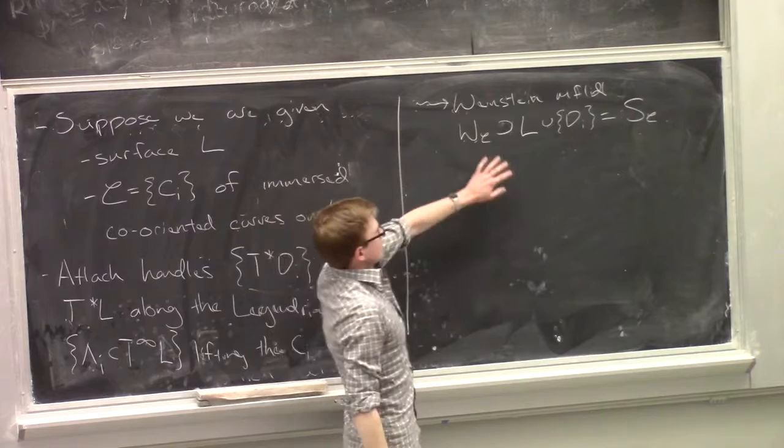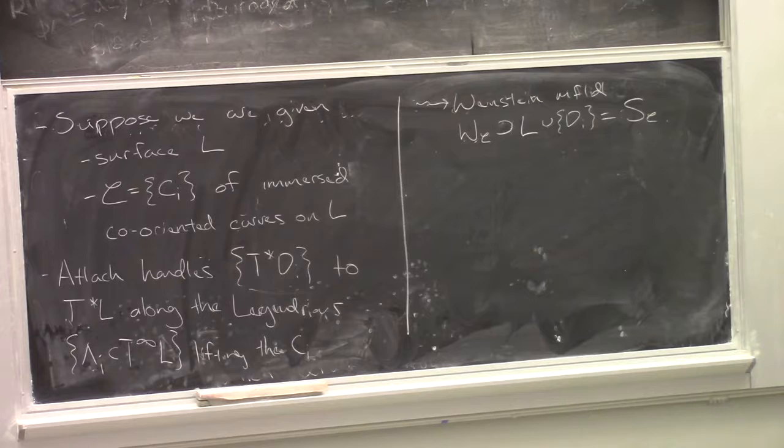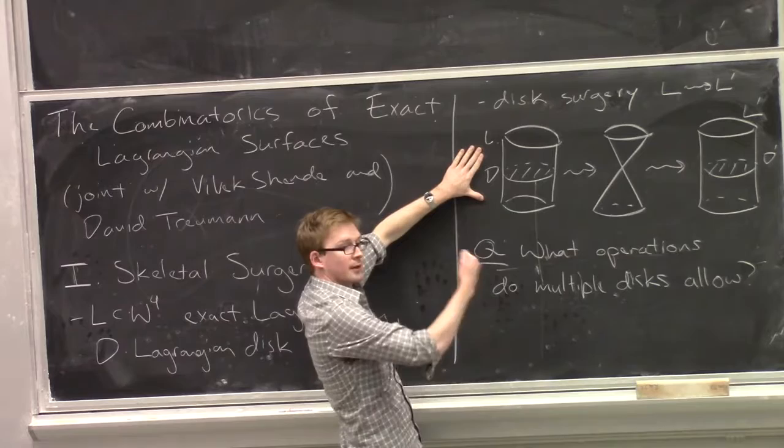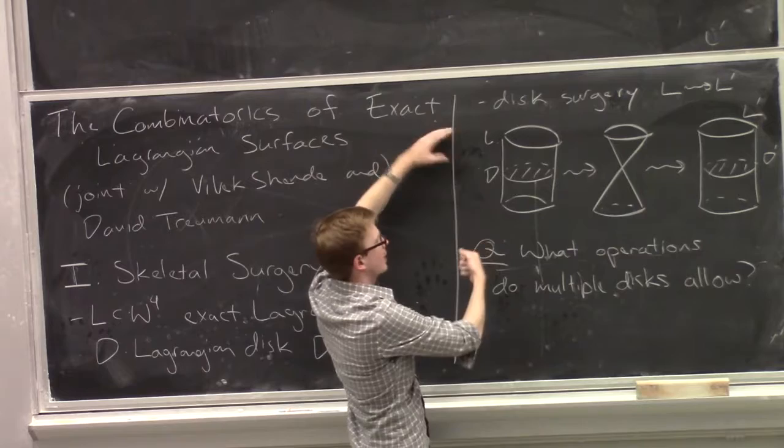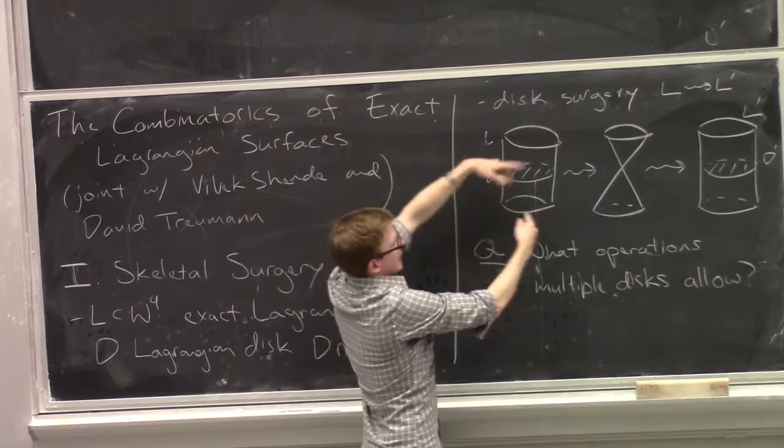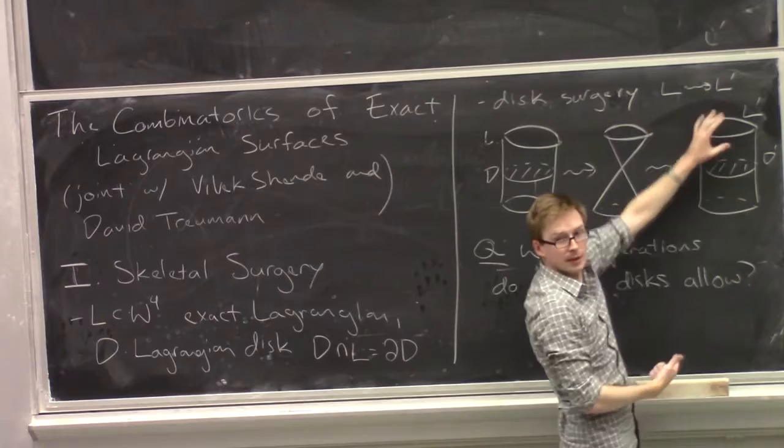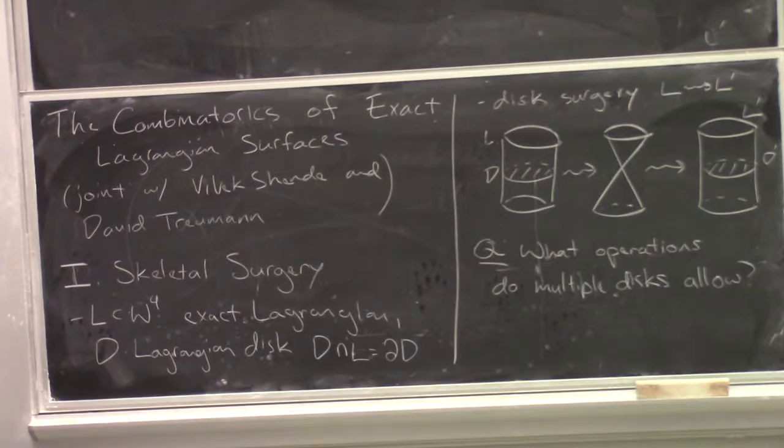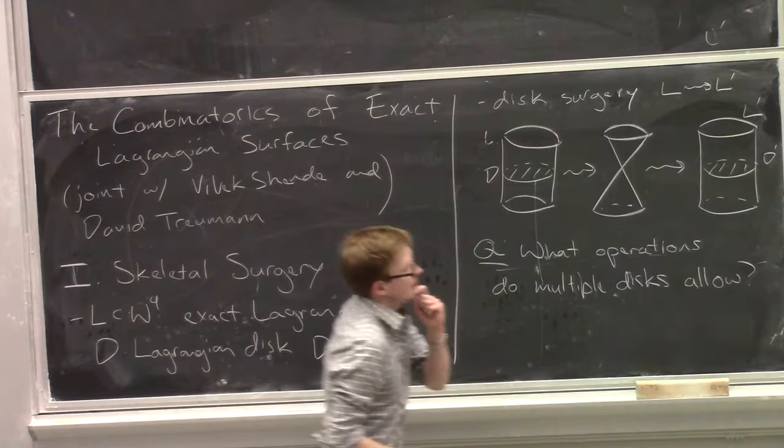So this is why I put the curves with co-orientation - that tells me how to lift them up to a bunch of Legendrians. I attach some handles, and now I have a Weinstein manifold. This comes with a natural Lagrangian skeleton. Sitting inside this, I have L together with all the disks. I'm going to write that as S of C. So here's our setup. And the question was, what kind of operations can I do on this thing?